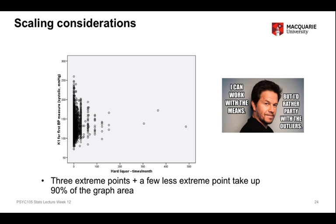In this example, we're looking at a blood pressure measurement on the vertical axis and frequency of consumption of hard liquor — meaning spirits generally — on the horizontal axis. We're interested in whether increasing frequency of hard liquor consumption is associated with an increase in blood pressure. The problem here is that most of the data are concentrated between zero and about 50, with a smaller number up to around 150, and three points at about 300 and above. So most of the graph space is being used up by just those three data points.